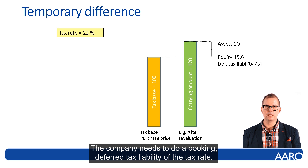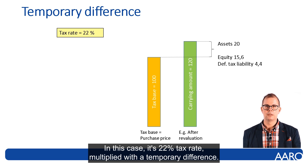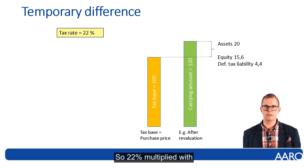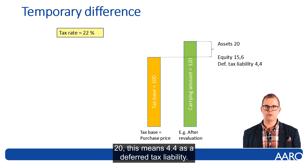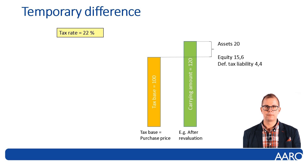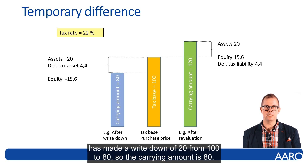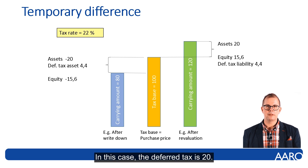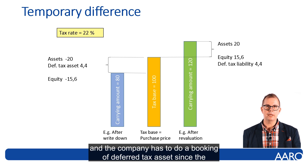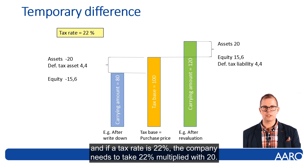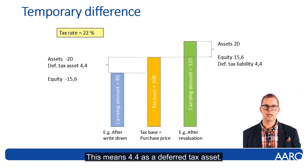The company needs to make a booking of deferred tax liability at the tax rate — in this case 22%. 22% multiplied by the temporary difference of 20 gives 4.4 as a deferred tax liability. The company might also do a write-down — in this case, from 100 to 80, so the carrying amount is 80. The temporary difference is 20, and the company has to book a deferred tax asset since the carrying amount is lower than the tax base. At a 22% tax rate, 22% multiplied by 20 equals 4.4 as a deferred tax asset.